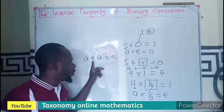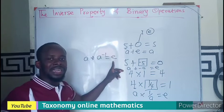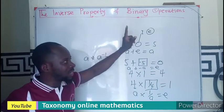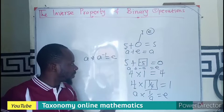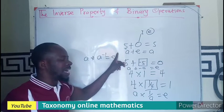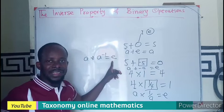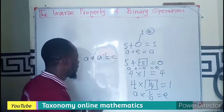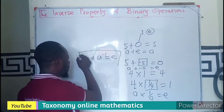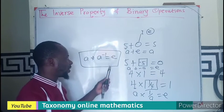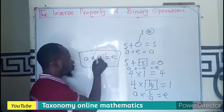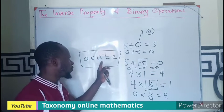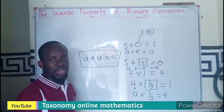The steps involved in solving for the inverse property are: step one, find the identity element; step two, substitute the value of E you have found back into the equation; step three, solve for the inverse, which we call a-prime. When you solve for this you will get your inverse.